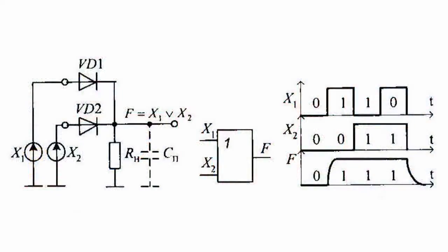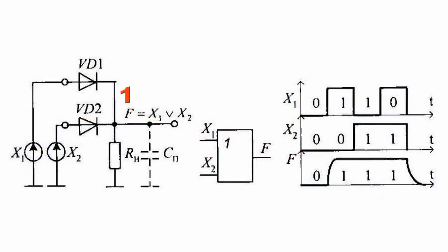Now let's look at the way the OR element is executed. The circuit shown indicates that the high voltage level at the output of diode element OR is set when one or two inputs are exposed to high voltage levels, which results in opening of diodes VD1 or VD2 or both of them.